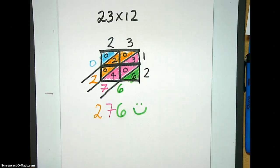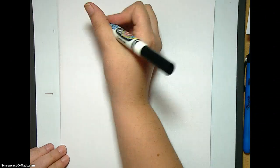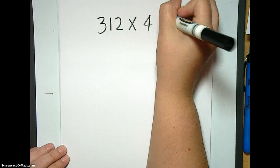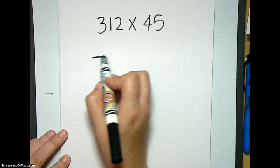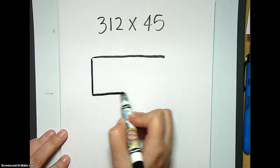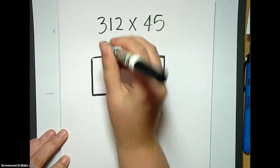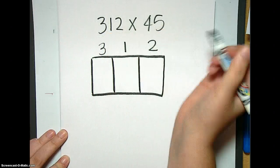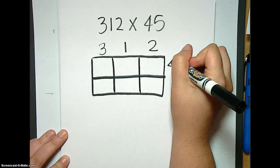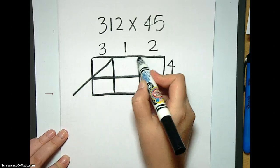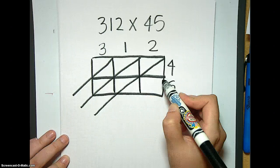Okay, so we're going to do one more that's much bigger and has some carrying, and I think that you will like it. So this one that we're going to do is 312 times 45. We're going to make our box bigger this time because we're going to have some extra columns. So this is for our 312 and our 45. So then I'm going to make my diagonals.